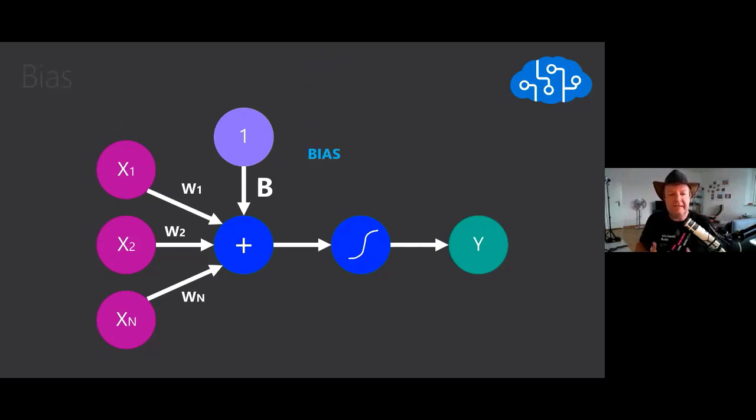This is basically the model of a neuron, or back in 1943, they were calling that a perceptron. You can still find that term - a very special word. And so now we have a neuron.